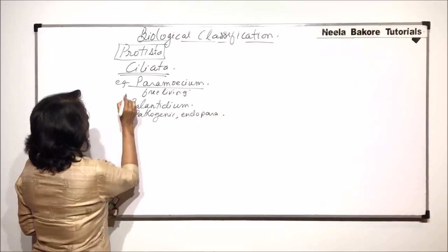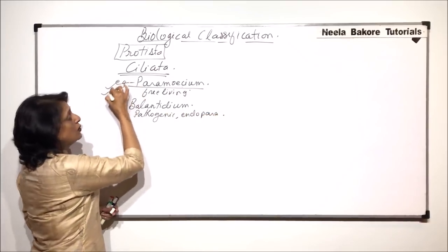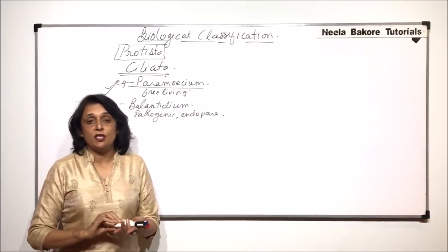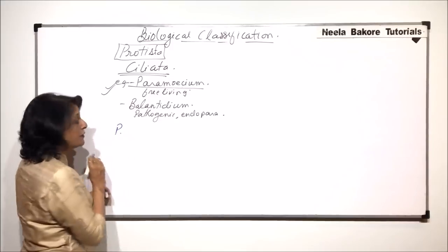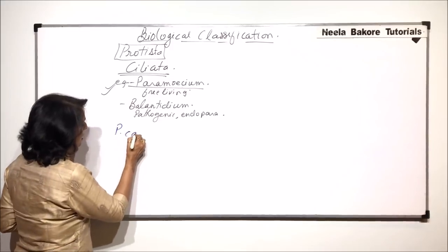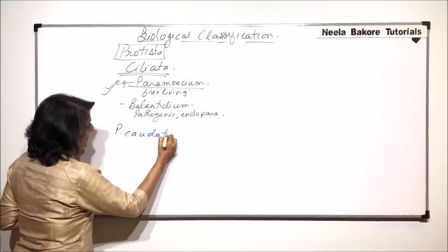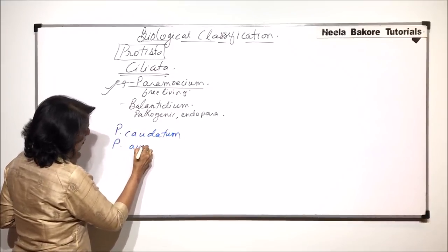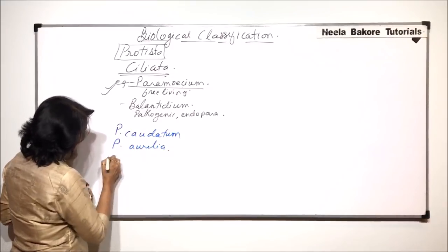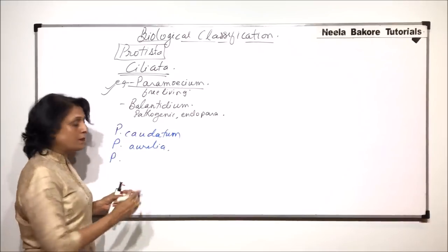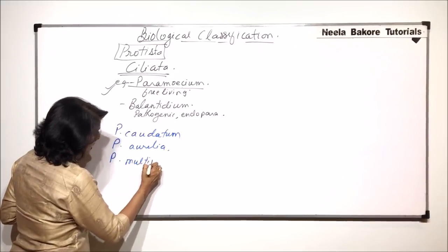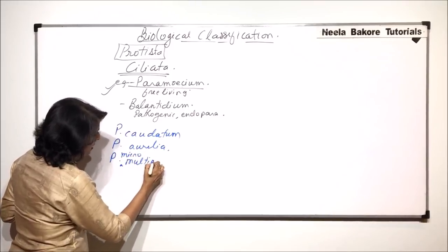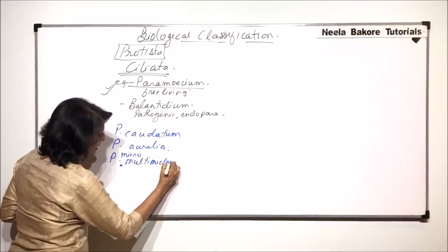These are two examples and we will be talking about paramecium in detail. There are three species of paramecium that we normally talk of: one is paramecium caudatum, then paramecium aurelia, and the third is paramecium micromultinucleatum.